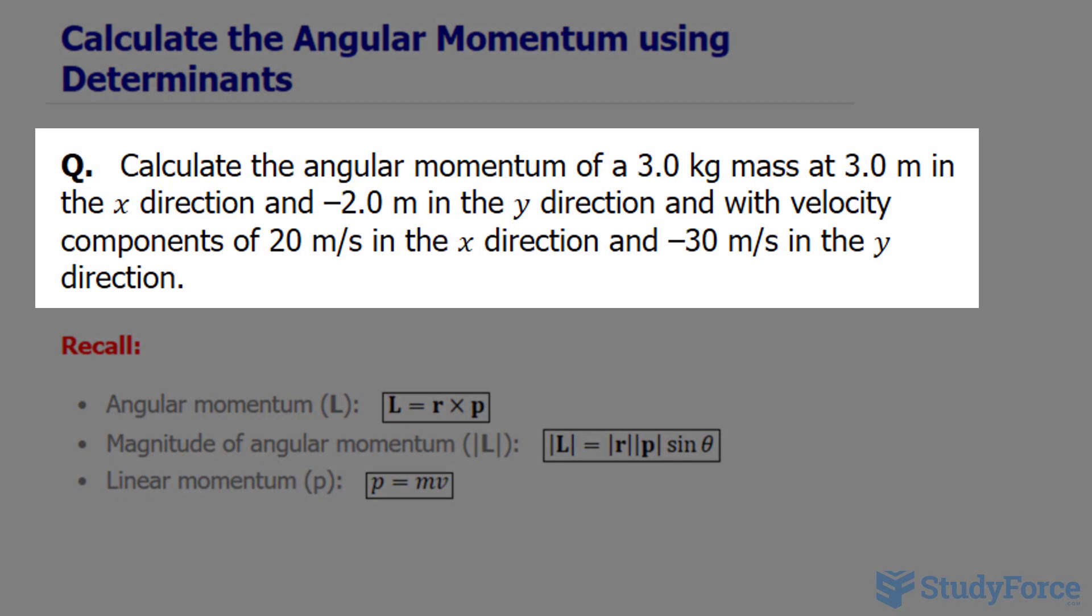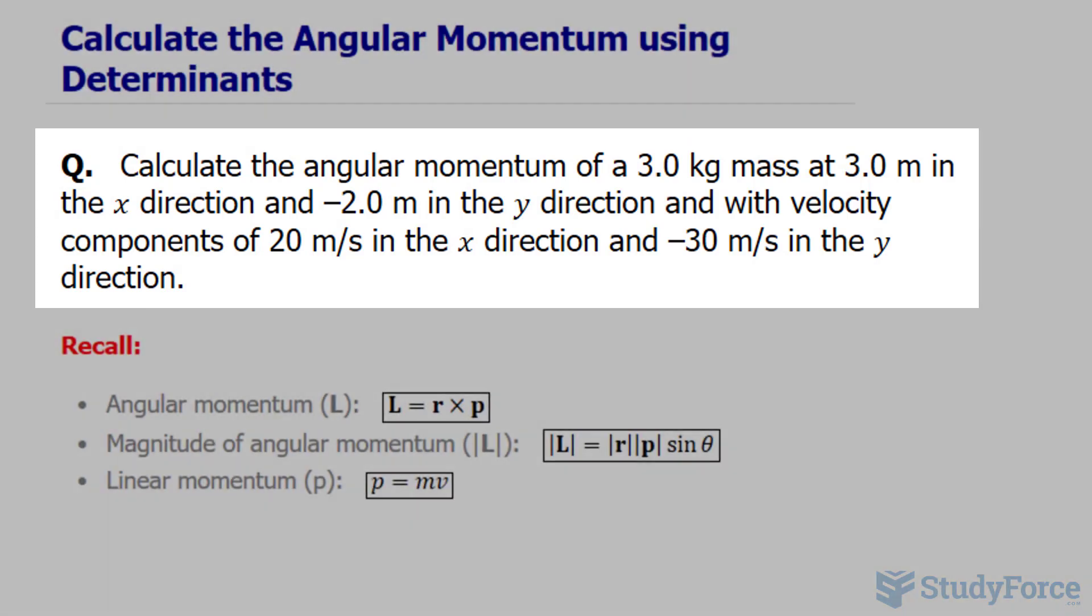The question reads: calculate the angular momentum of a 3.0 kg mass at 3.0 m in the x direction and negative 2.0 m in the y direction, and with velocity components of 20 m per second in the x direction and negative 30 m per second in the y direction.